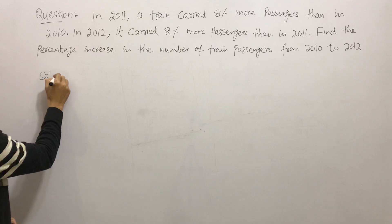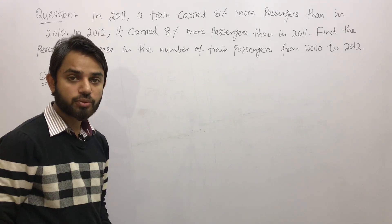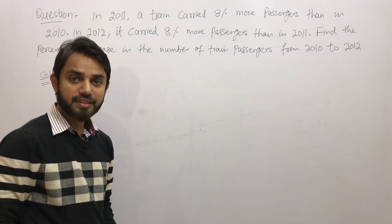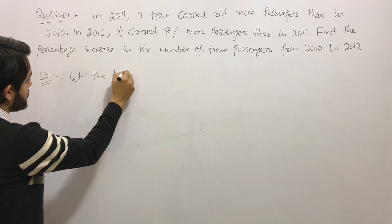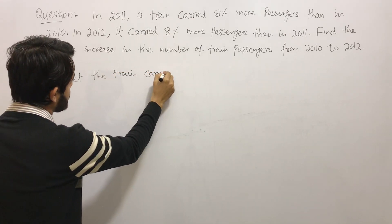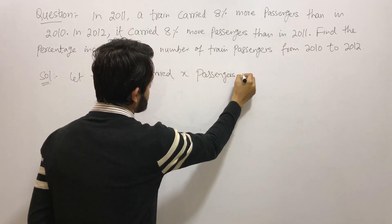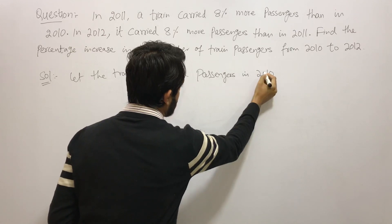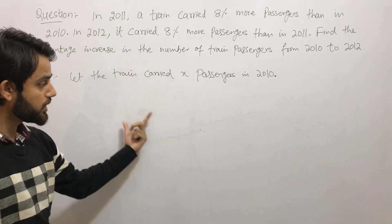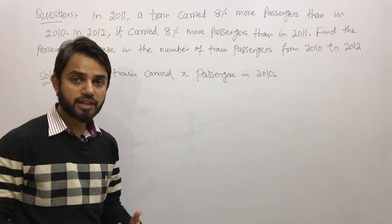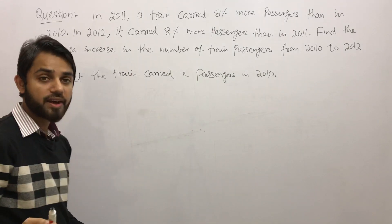In order to solve this question, since we don't know how many passengers there were in 2010, we are going to assume that the number of passengers in 2010 is X. So let the train carry X passengers in 2010. Now before going further, I want to give you a quick overview about how we increase or decrease a number, because I am going to use that technique in this question. Please give full attention.